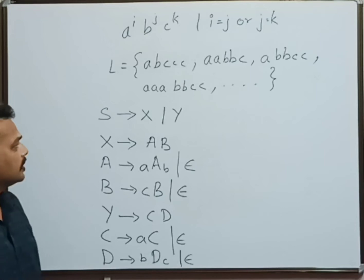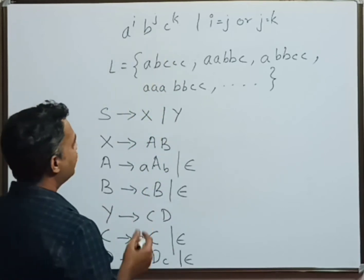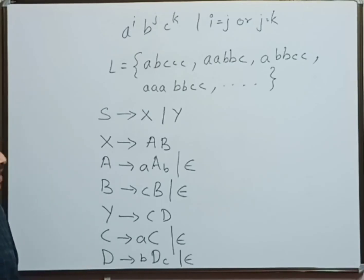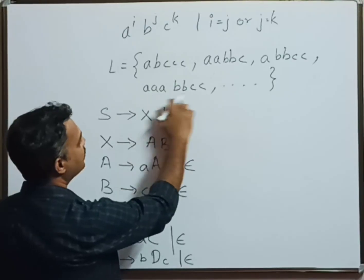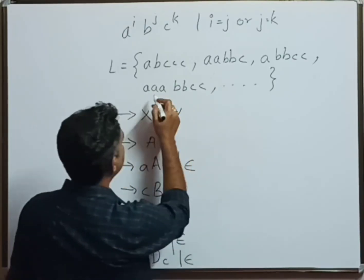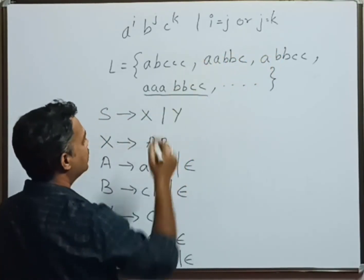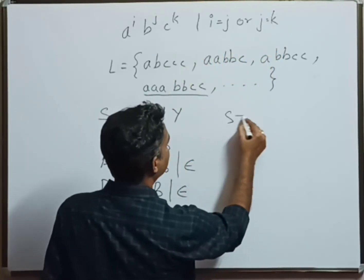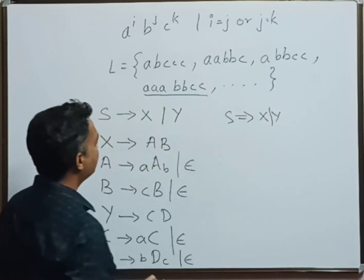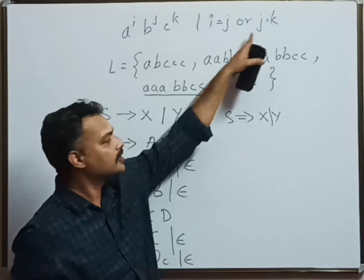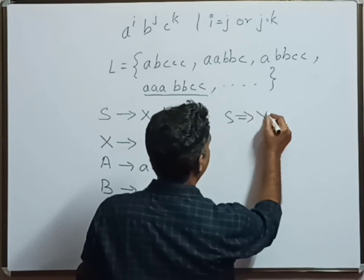This is the overall CFG design for the given problem statement. Now let us cross-verify whether we have done proper CFG design or not. For that, let us take any one string. Let us take this string. The string is triple A, double B, double C. That means we are dealing with this particular situation or condition. So it is S derives X or Y. Since I am dealing with the second condition, I have to take Y, so I will be applying the second rule, Y.